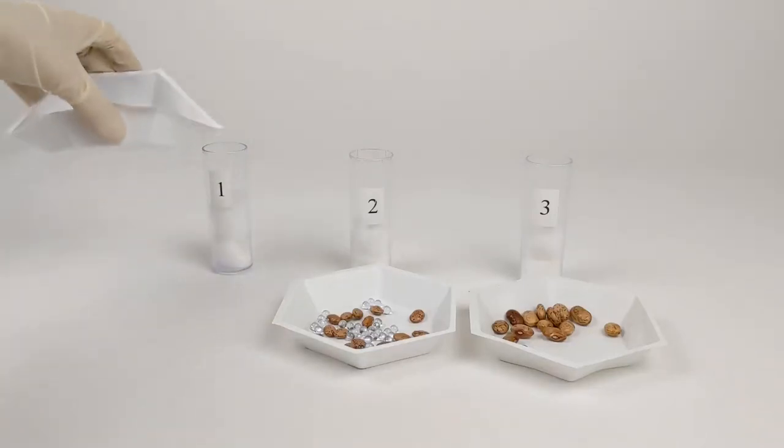So the next step is to finish assembling the respirometers. First by adding the contents to each vial. Vial 1 has glass beads.